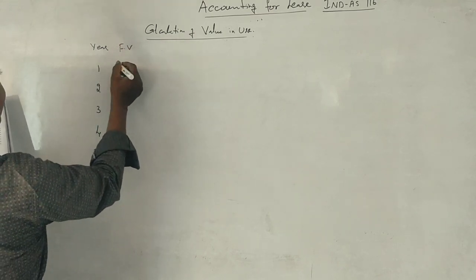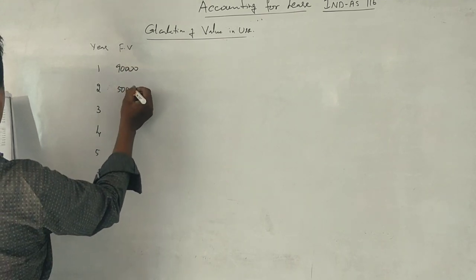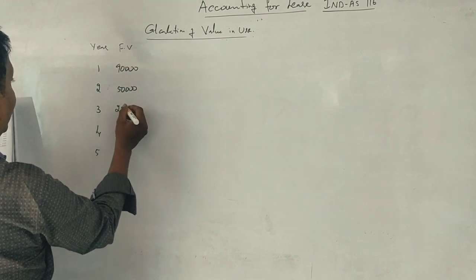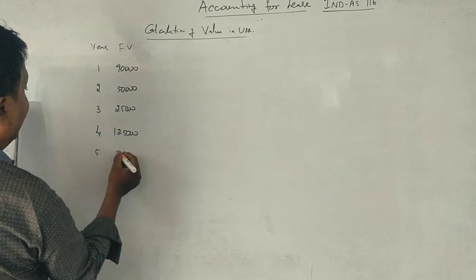The future cash flows are: 90,000, 50,000, 25,000, 1,25,000, and 8,50,000.